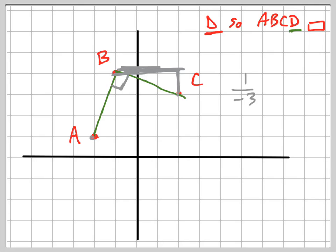The slope from A to D, wherever that is, has to also be 1 over negative 3. So I'm going down 1 now instead of up 1, and to the right 3.